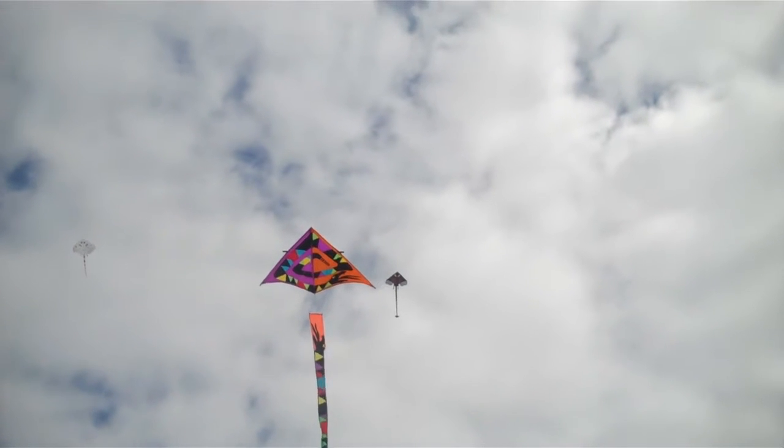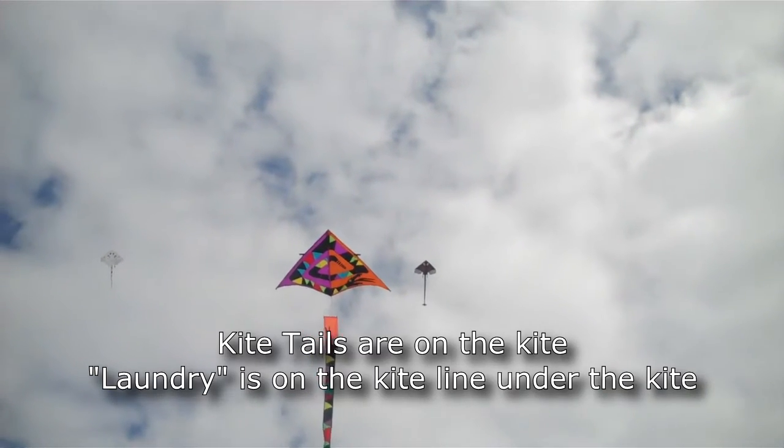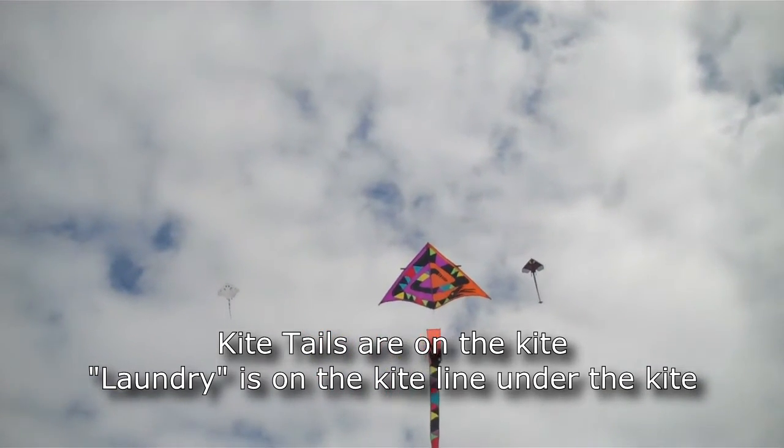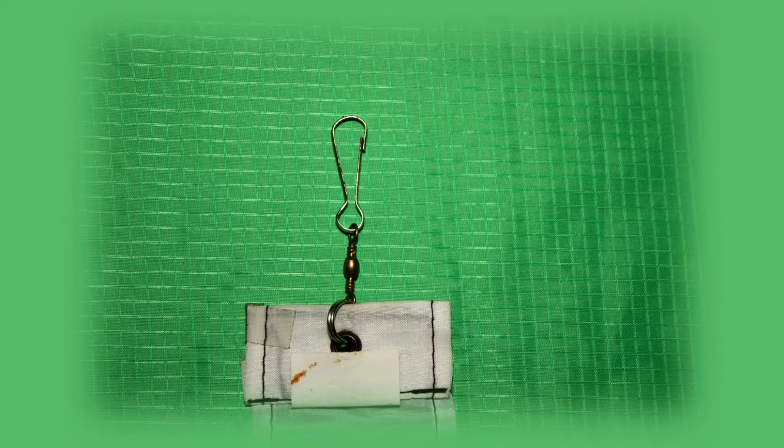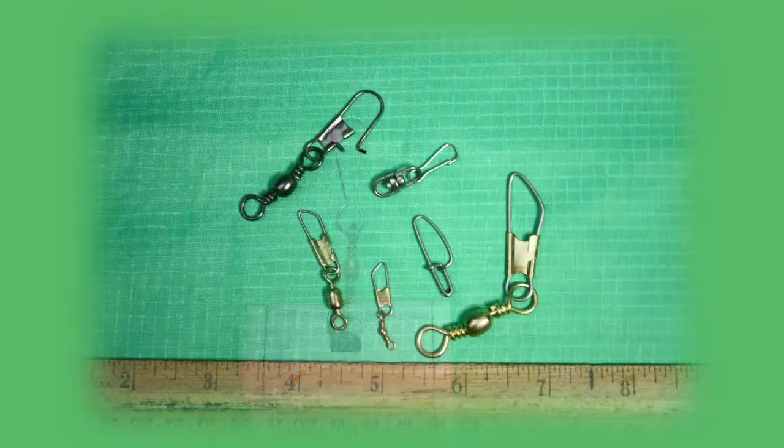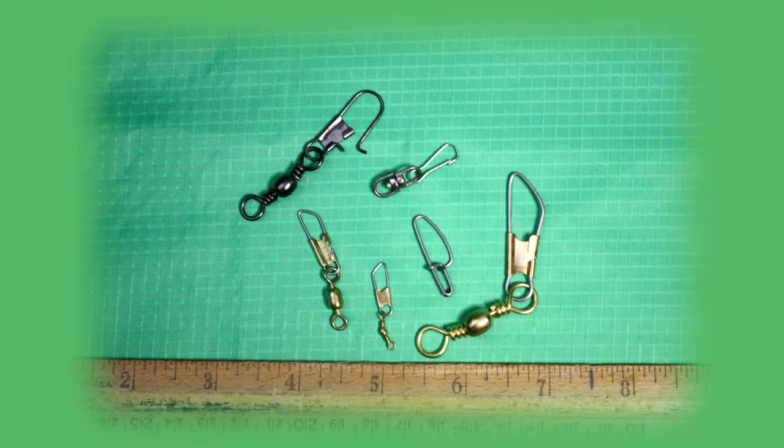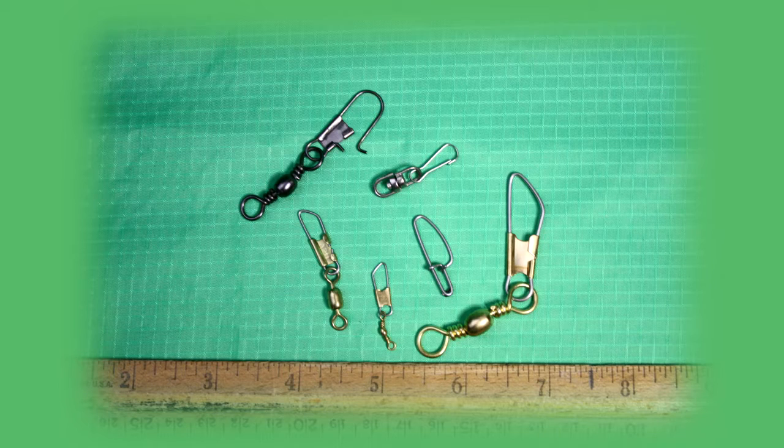One thing that is not so fun is getting the tails and the laundry on and off the kite. Kite tails and laundry often come with a small clip and swivel commonly used in freshwater fishing rigs. Convenient and useful as they are, their small size and stiffness can make them harder to use than is necessary.